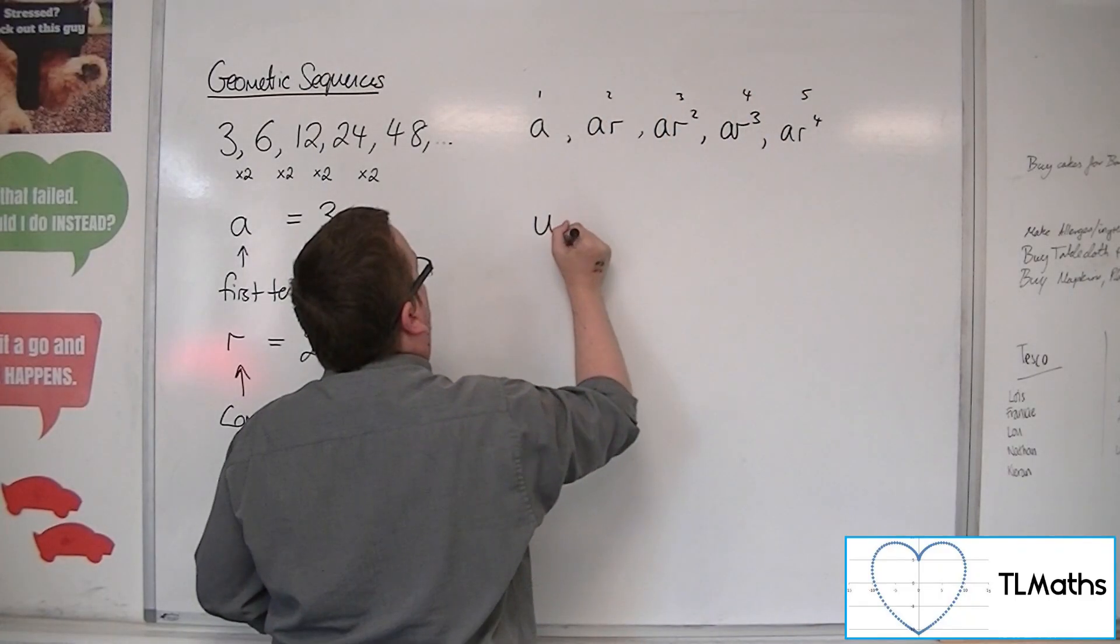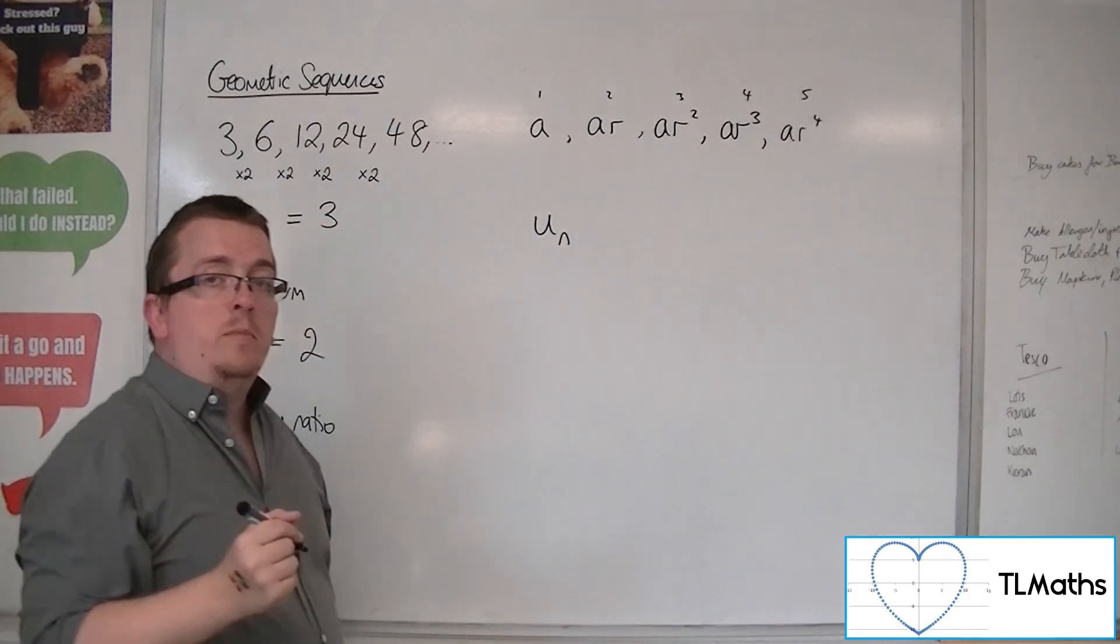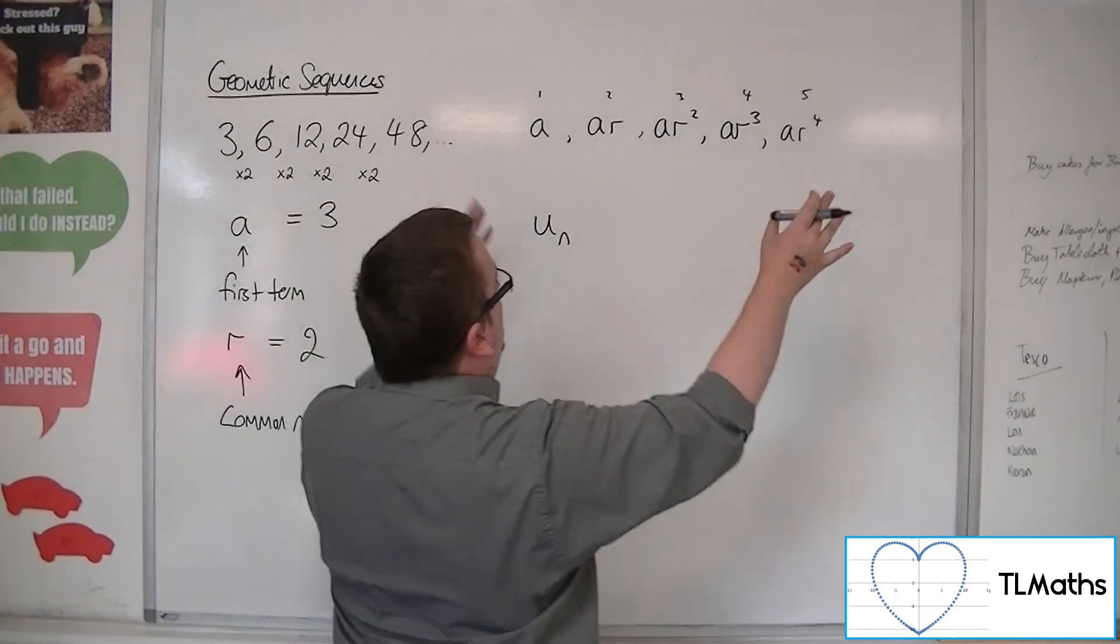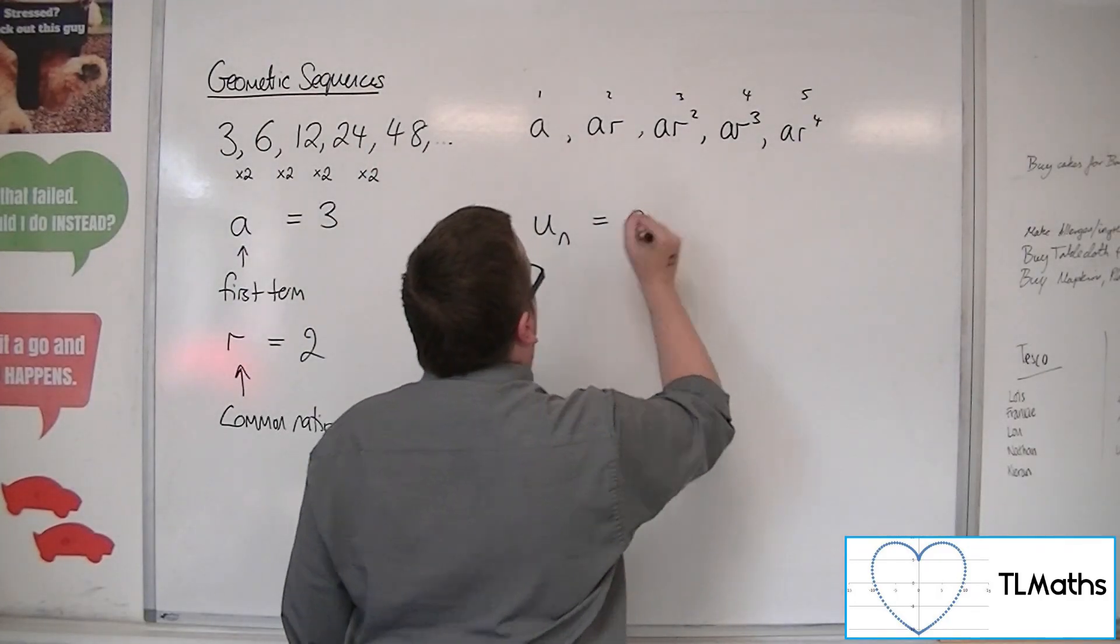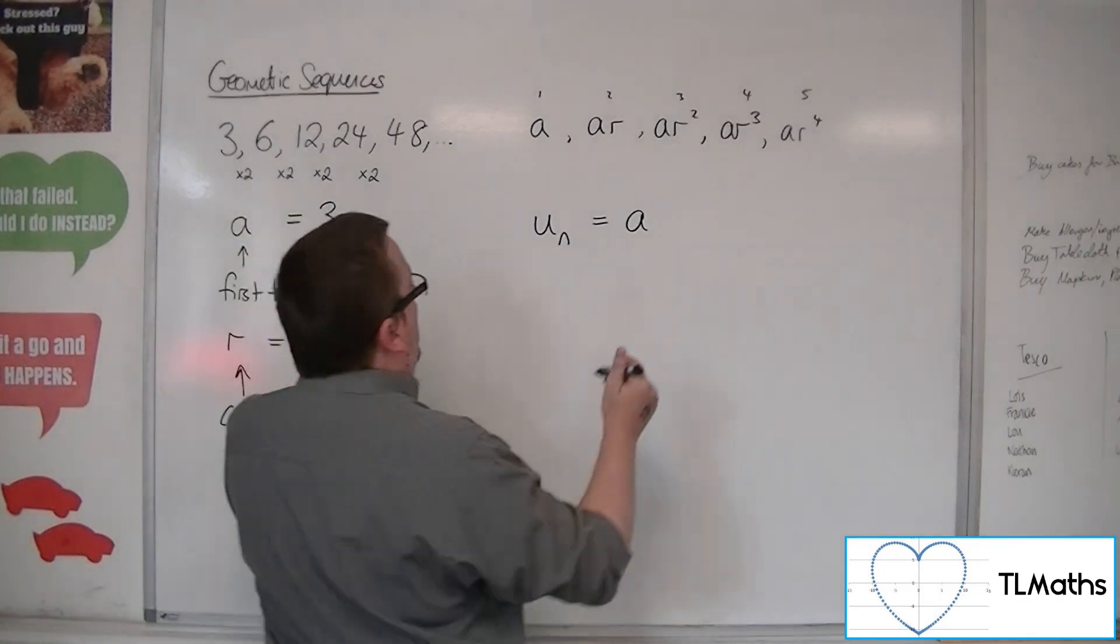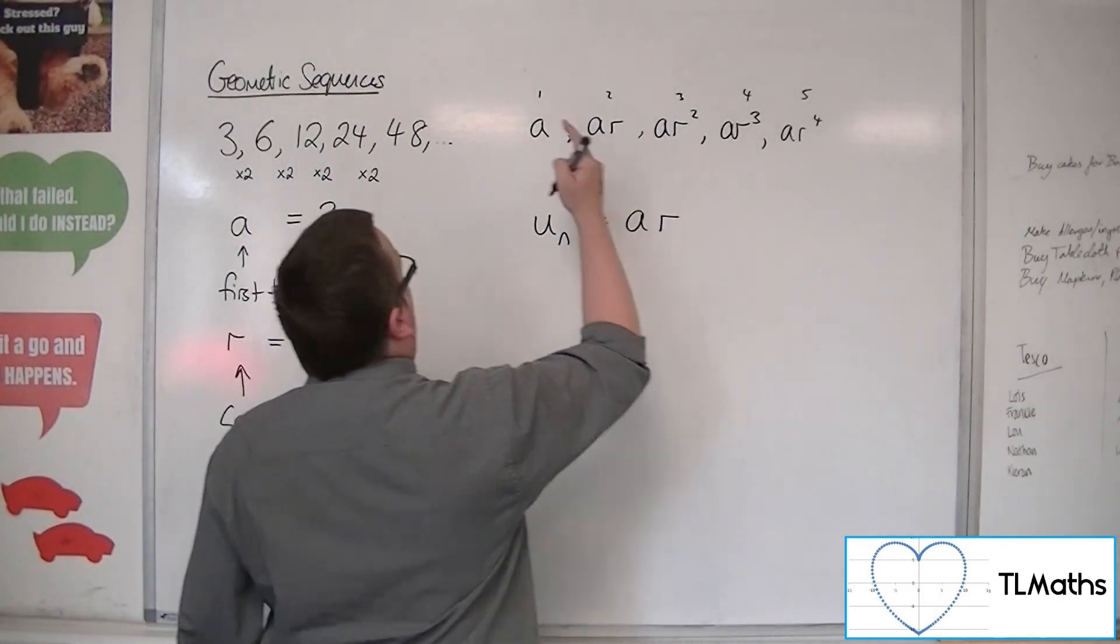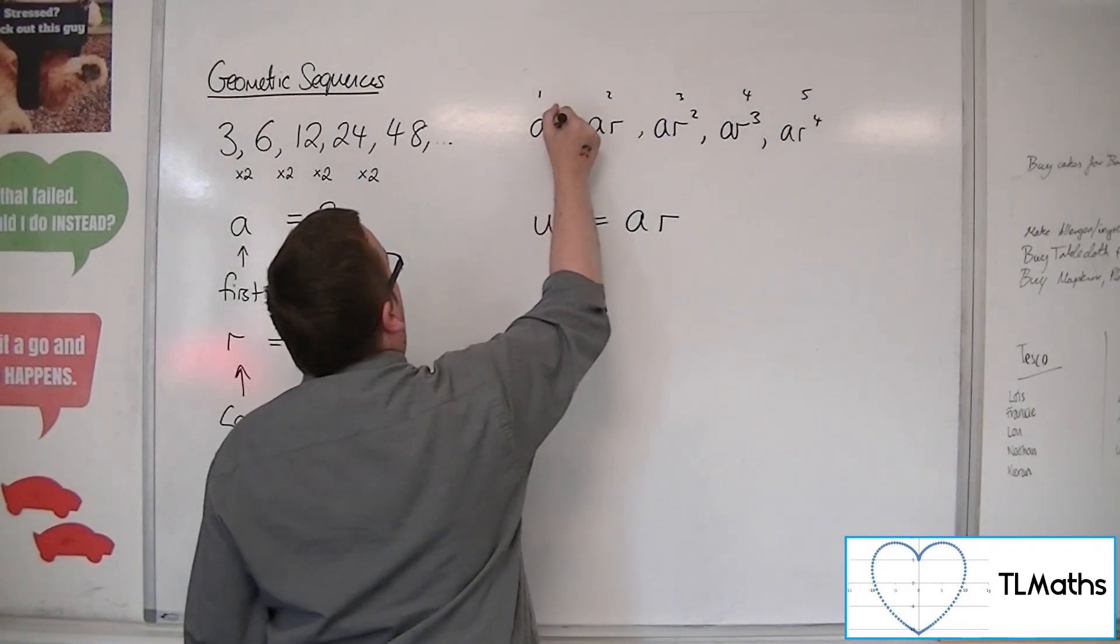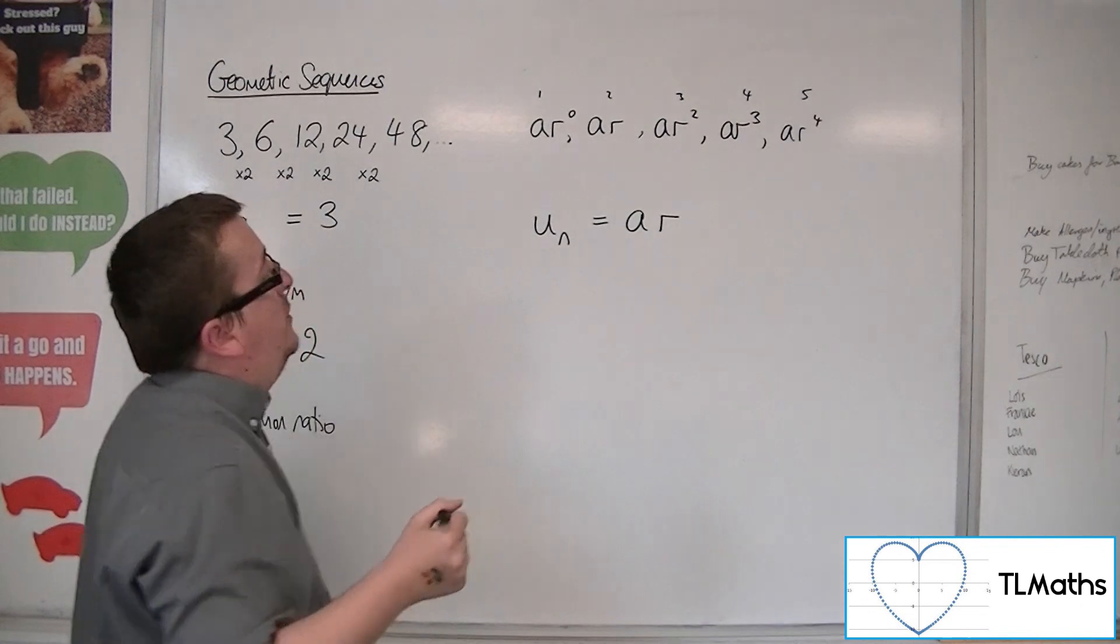And so we're able to come up with an nth term for this sequence. Now all of the terms have an a in it, so your nth term would have to have an a. They all have r to the power of something, apart from this one. But you could see this as r to the power of 0. So you could write that as r to the power of 0 if you like.